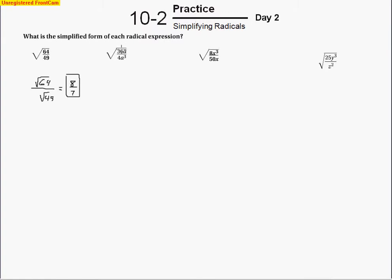Over here we can do some division first. 49 and 64 had no common factors, but 4 does go into 36 — even though those are both perfect squares, we can simplify. 4 goes into 36 nine times, and this 1a cancels one of the a's on the bottom, leaving just a squared. So we write it as two separate radicals, take the square roots of those perfect squares, and we're left with 3 over a.